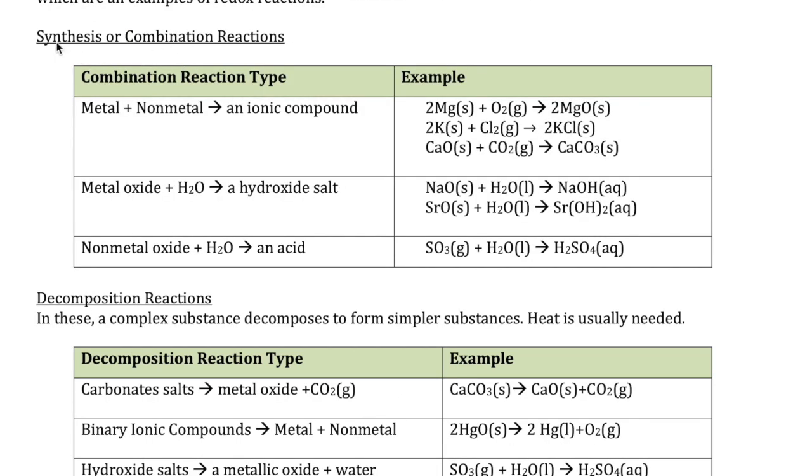Combination reactions, also known as synthesis, is where you combine two things to form something bigger. There's different ways this can happen. One is you have a metal and a non-metal, and you combine these two to form an ionic compound. So these are examples of that. You have a metal, which is magnesium, with a non-metal, which is oxygen. You combine them to form magnesium oxide. That's an ionic compound. Here's another example: potassium, which is a metal, combining with chlorine, which is a non-metal, forming potassium chloride, which is an ionic compound.